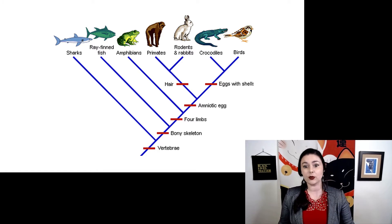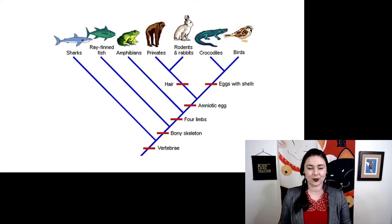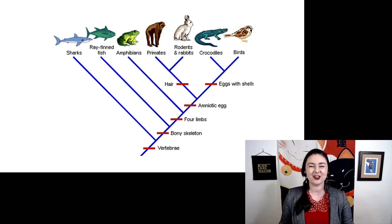So an amniotic egg, we have that, it's just inside our placenta. That happened before we actually separated from birds, the ancestors of birds and crocodiles. Four limbs go back even farther, as does a bony skeleton and a vertebrae. You might want to go back and rewatch some of the lectures about the evolution of kingdom animalia to remind yourself about these traits.